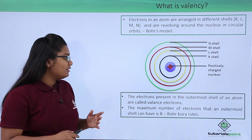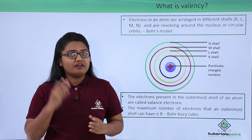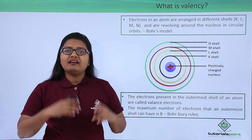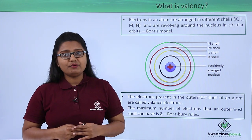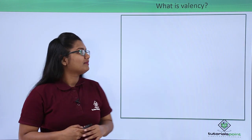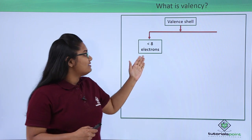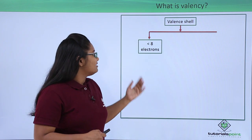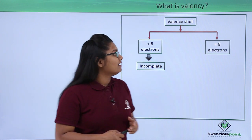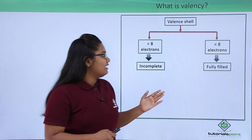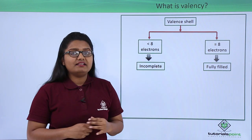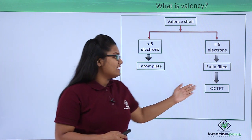From Bohr and Bury rules we know that an outermost shell or valence shell can have at most eight electrons — either less than eight or exactly eight. When a valence shell has less than eight electrons it is called incomplete. When it has exactly eight electrons the shell is said to be fully filled, and such a shell is said to possess an octet.